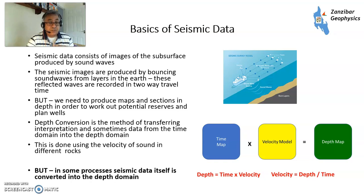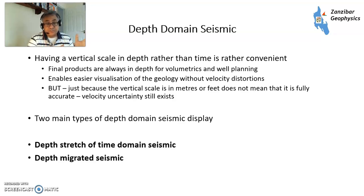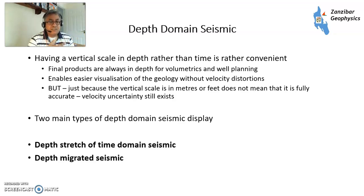You can also produce images in the depth domain, and that's what I'm going to talk about today. It's obviously convenient to have depth in meters on the side — there are no distortions due to various velocity factors, it looks right, and you can make decisions from that.